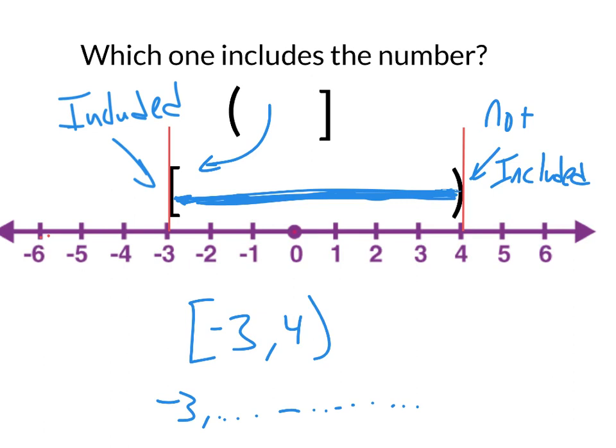And then if we're going to get close to 4, we might have 3.8, we might have 3.9, we might have 3.9999, but 4 will not be included in our list.